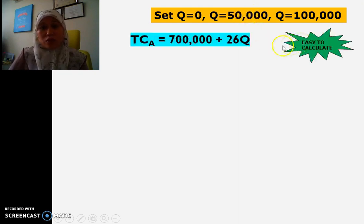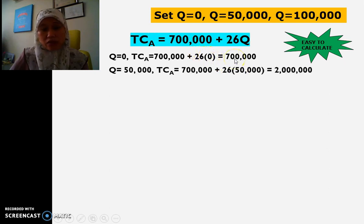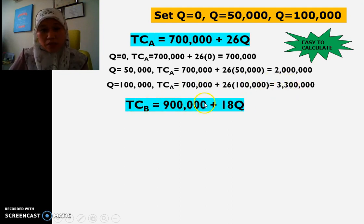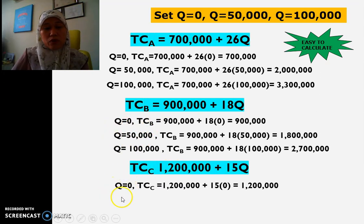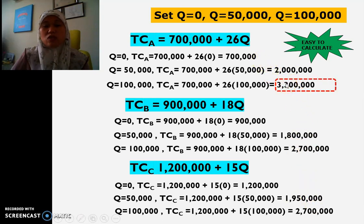For TCA, when Q = 0 we get RM700,000; when Q = 50,000 we get RM2,000,000; and when Q = 100,000 the total cost for A is RM3,300,000. We do the same for TCB and TCC using the same three Q points. From all these TC values, the maximum TC is RM3,300,000.